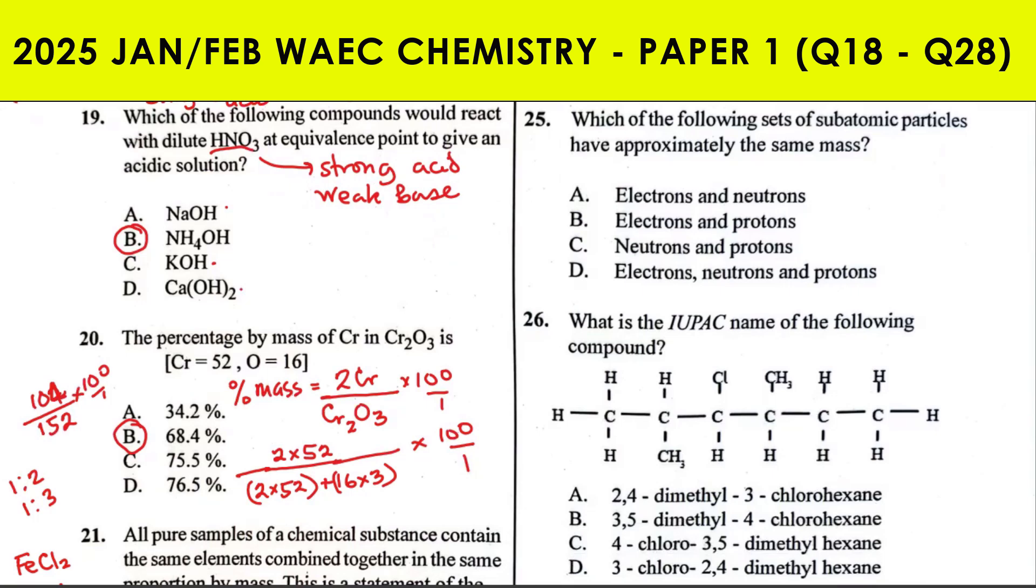Question 25: which of the following sets of subatomic particles have approximately the same mass? We have proton, neutron, electron. The mass: this is 1, this is 1, this is 1/1850 or thereabout. In terms of charge: this is +1, this is neutral or zero, this is -1. What are you looking for? Same mass. It is the proton and neutron that contribute to the mass of an atom.